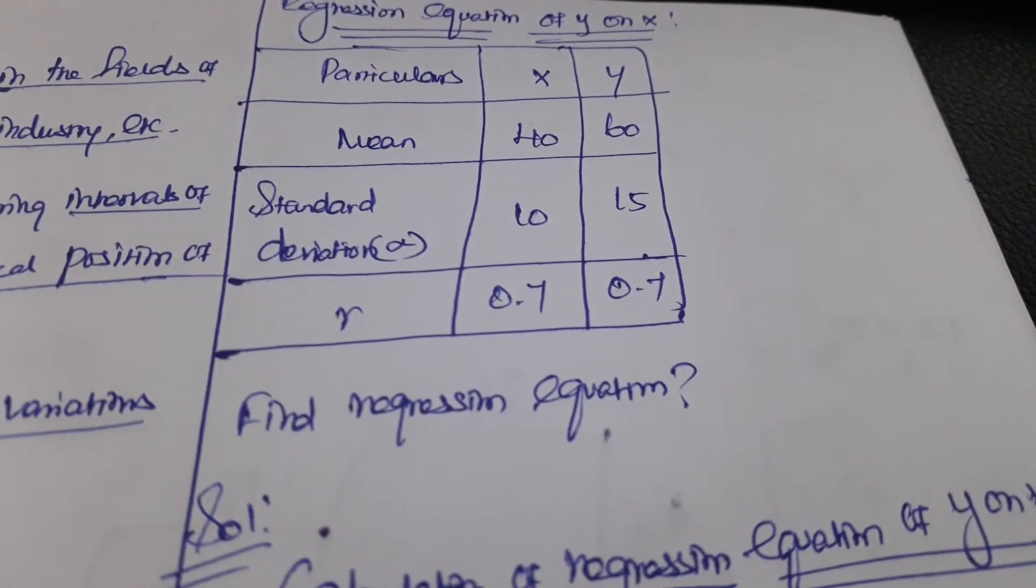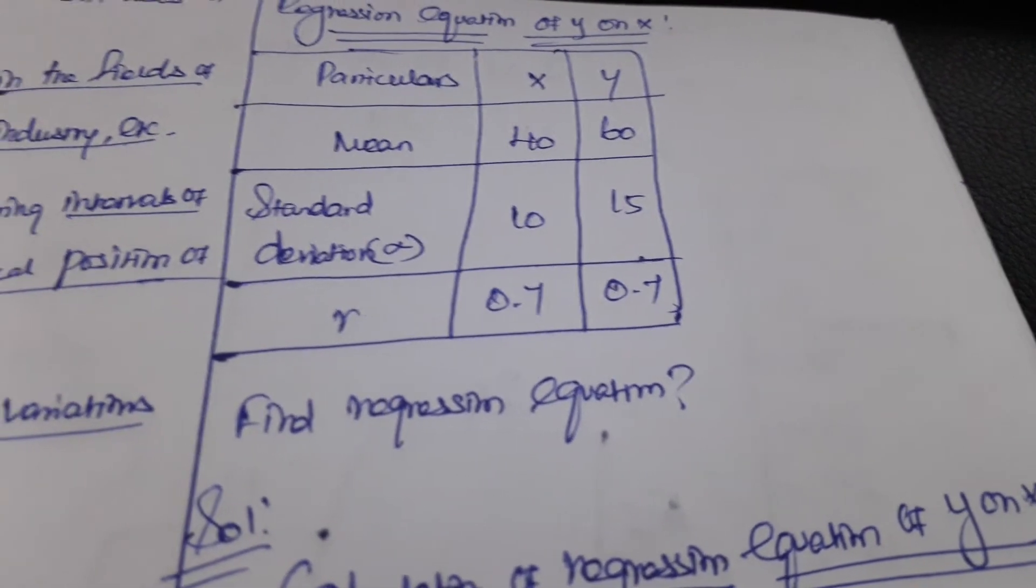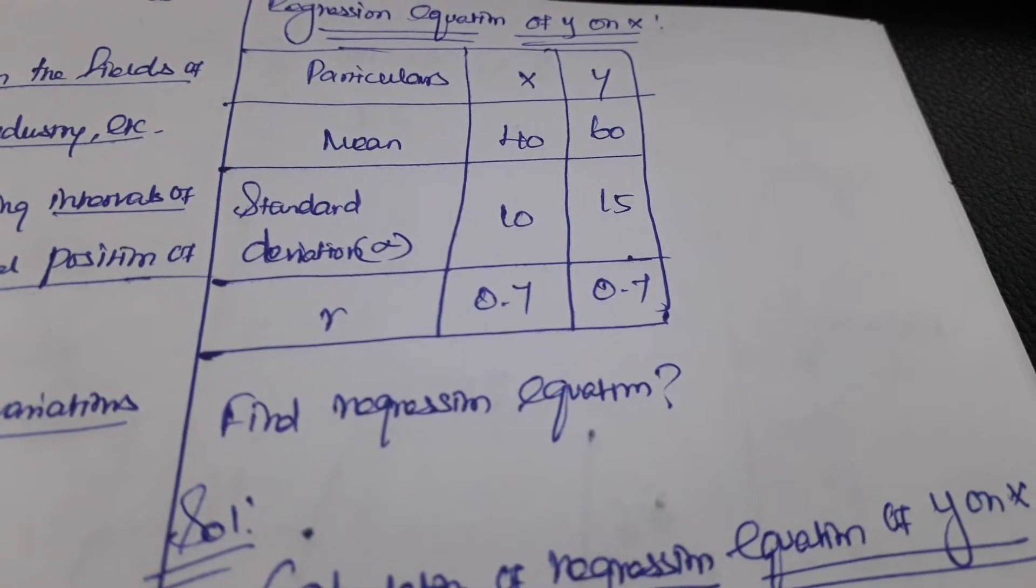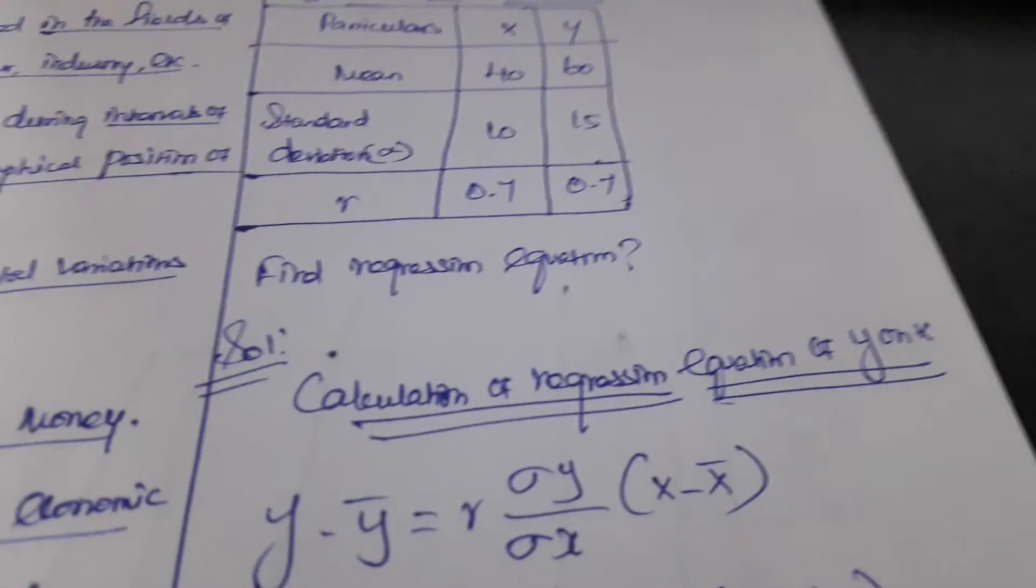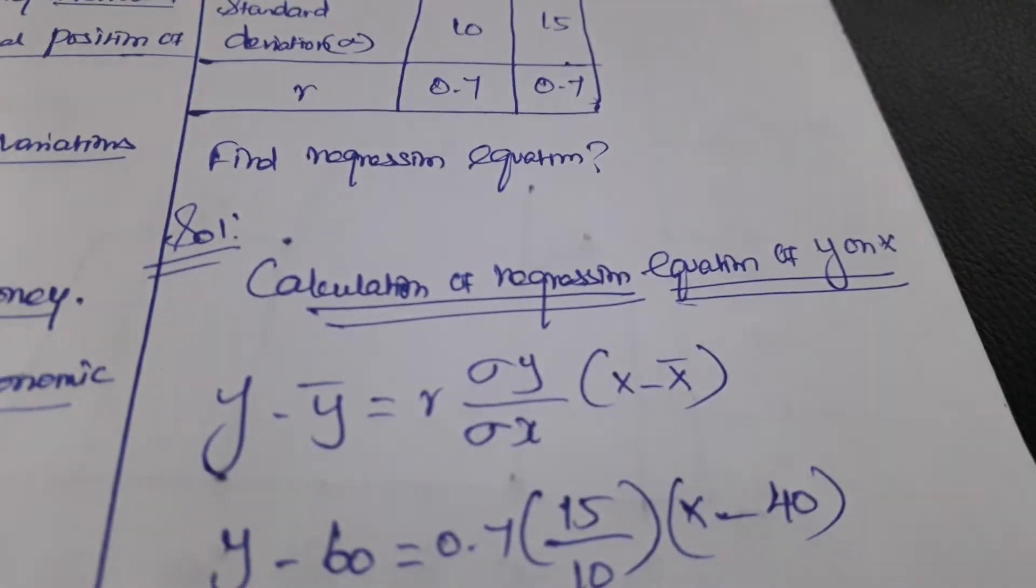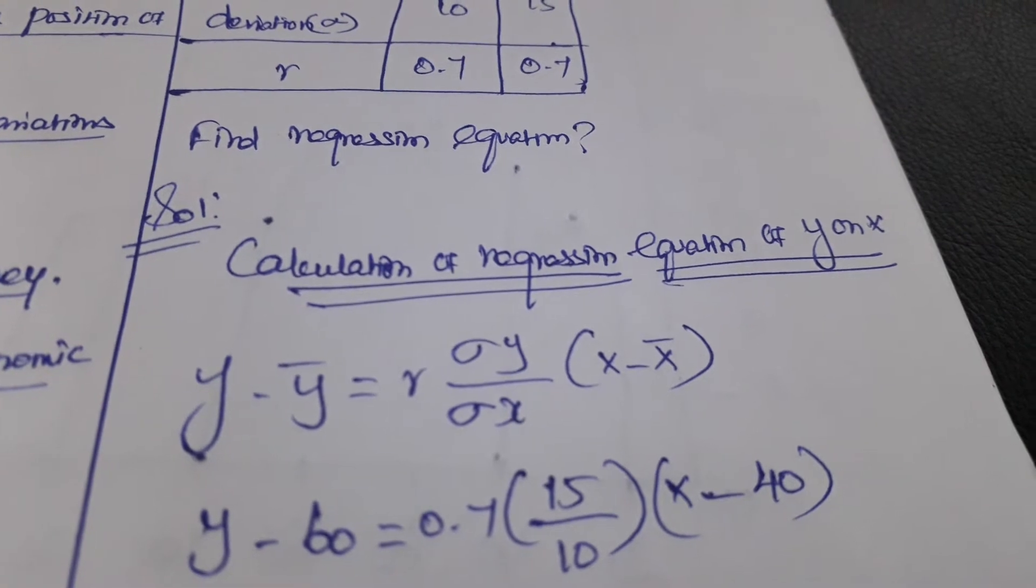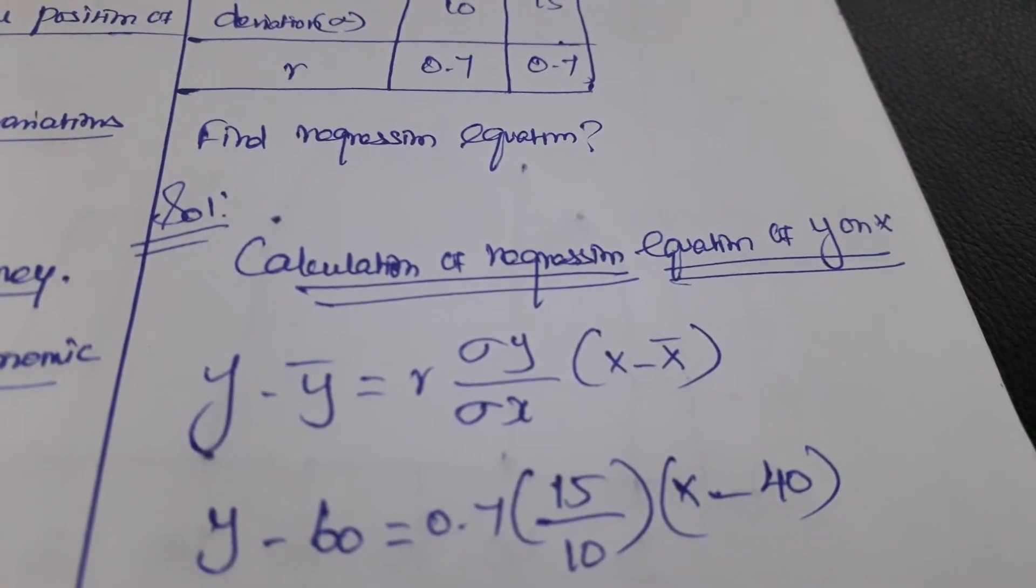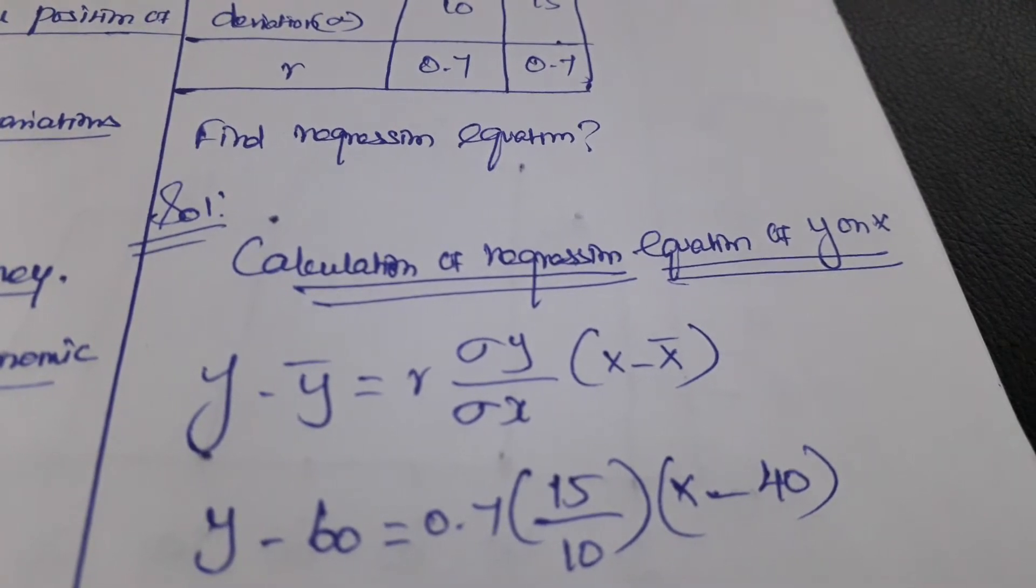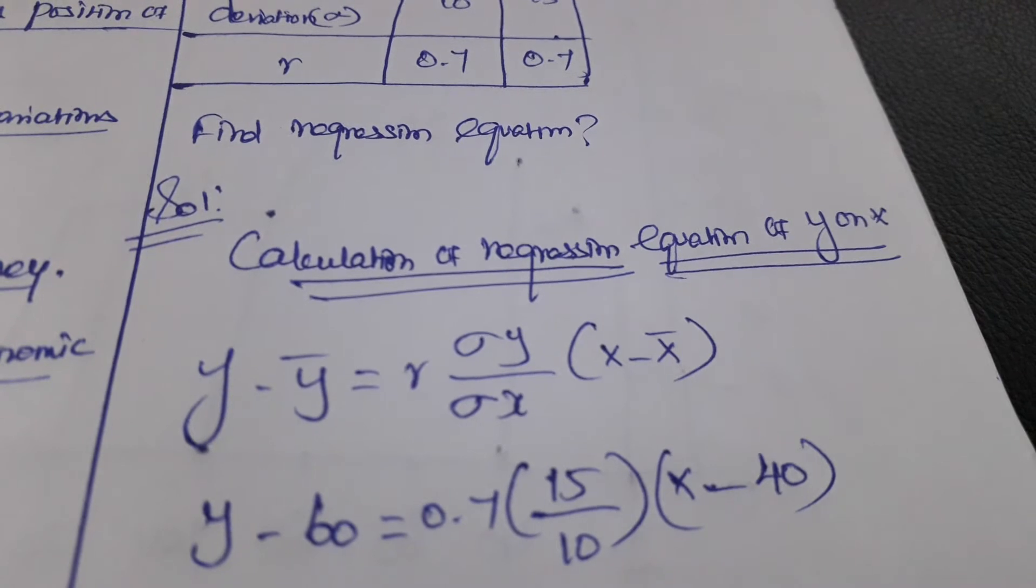In examinations it is in statement format. We need to convert them into table format, then we can solve the problem easily. The heading would be: Calculation of Regression Equation of Y on X. In this problem they have asked only for Y on X, that's why we are going to solve Y on X.